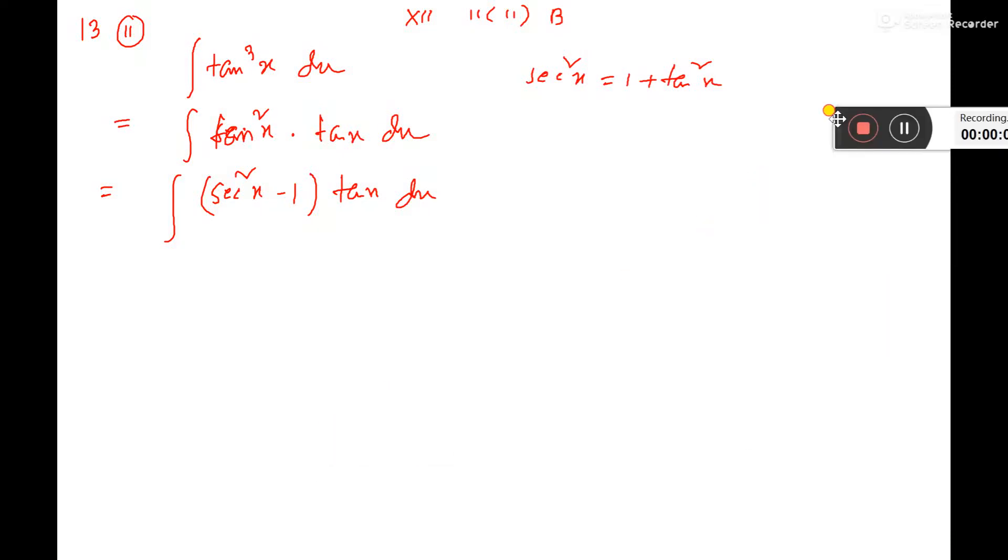The sum is tan cube x. So tan cube x is tan square x into tan x, then tan square x formula is sec square x minus 1.